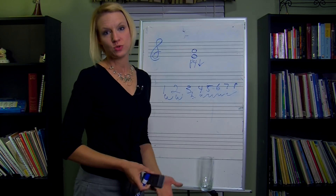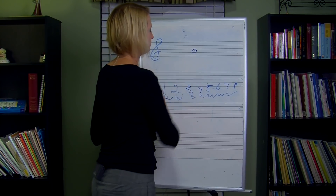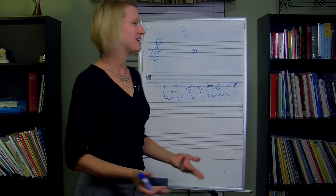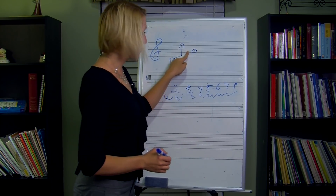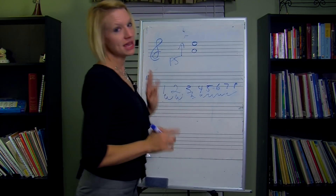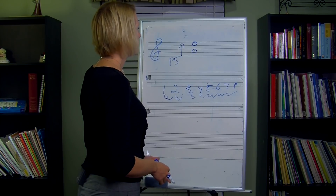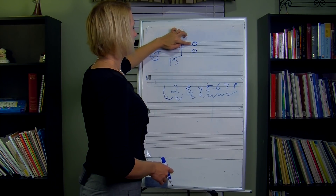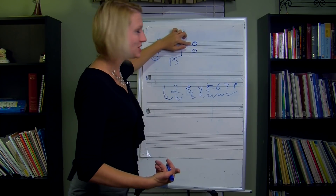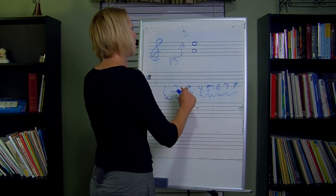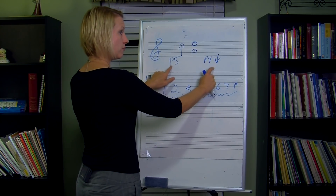Another really easy way to do it is to just compute the inversion. So if we need a perfect fourth going down, the inversion of a perfect fourth would be a perfect fifth. So we can build a perfect fifth going up. A perfect fifth going up from A would land on E — there's no flat or sharp on there. A perfect fifth going up is going to be this E right here. And since we already know that the inversion is going to be the perfect fourth that was our original question, the perfect fifth up and perfect fourth down is the same answer.